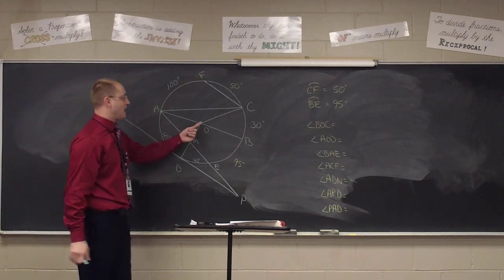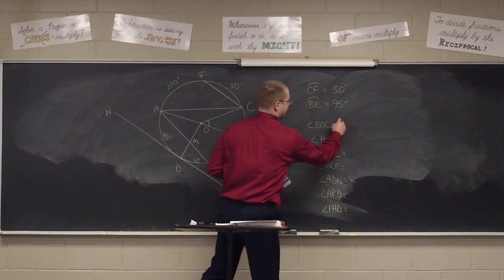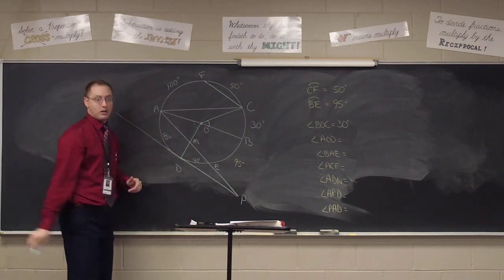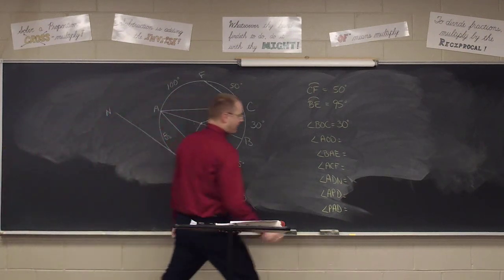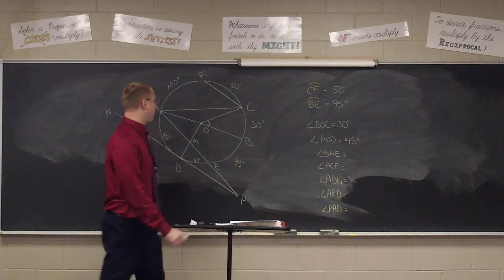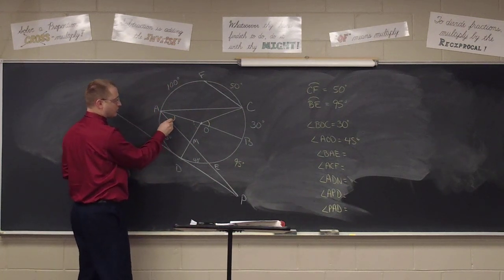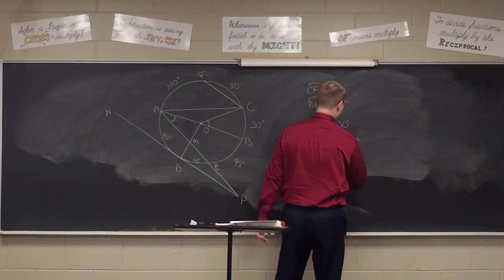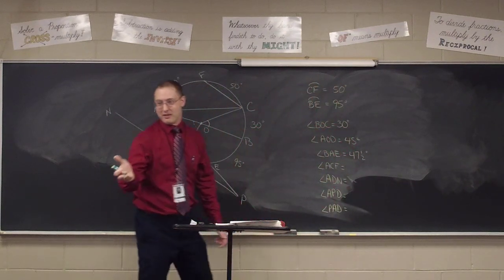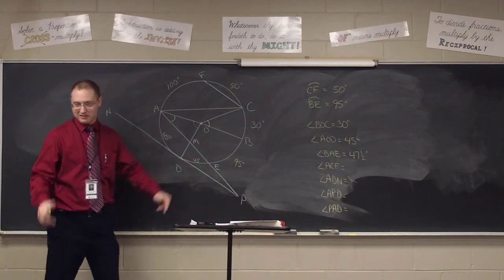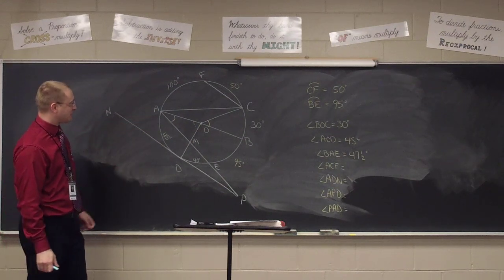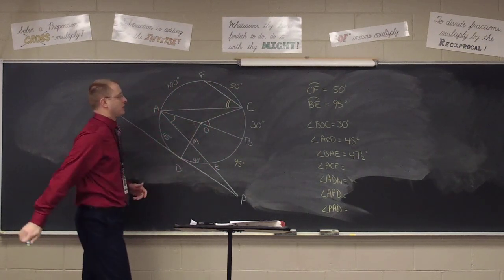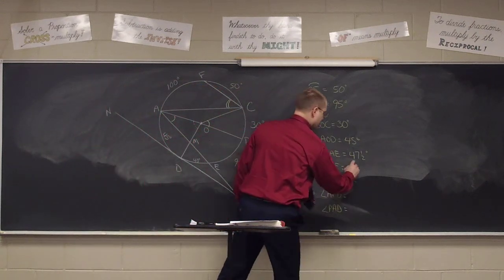We need angle BOC — 30 degrees. Central angle which is equal to its arc. For angle AOD — another central angle — 45 degrees; central angle equals its arc. Angle BAE — an inscribed angle — 47 and a half degrees, which is half of 95. 47 and a half degrees would be correct for angle BAE.